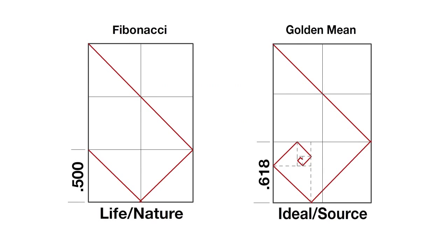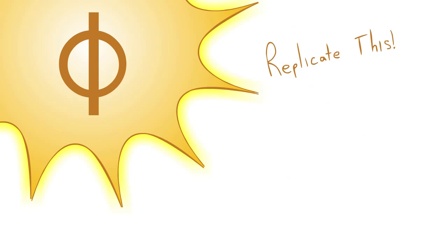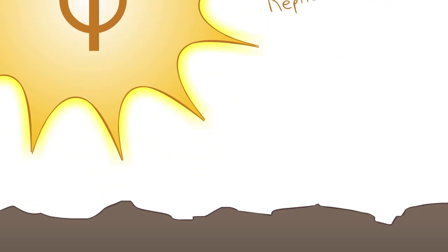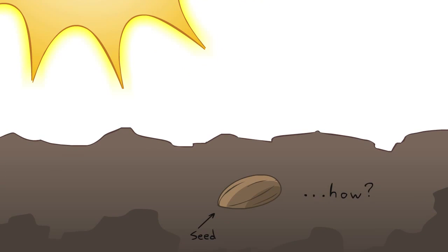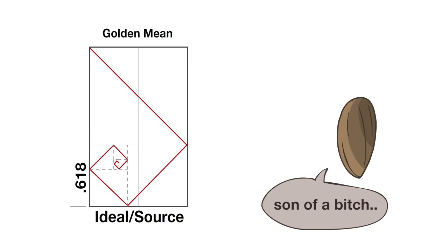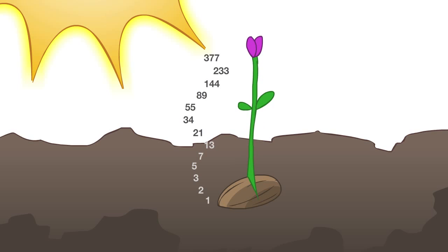However, Phi has no beginning and no end. Life doesn't know how to deal with that. It's like Source says, go and replicate this, and Life says, we don't know how. Because life doesn't know how to create from something that has no beginning.